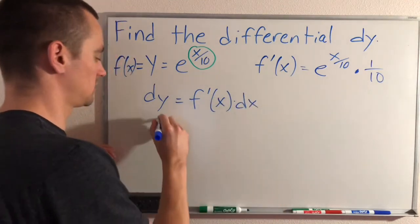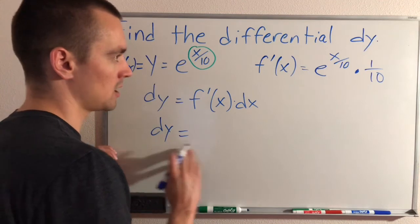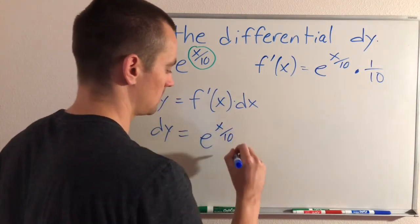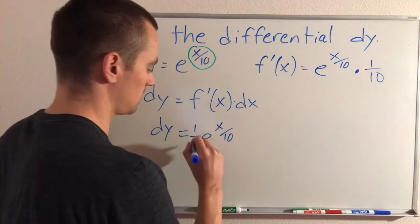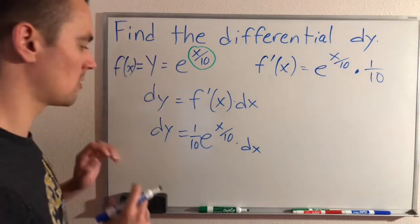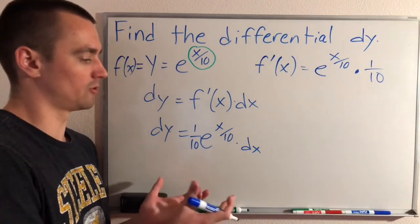So now basically just putting this into this formula we have, our differential, which is dy, would just be defined as e to the x over 10 times 1 tenth times dx. So this is really all it is to find a differential. This is all you really need to do.